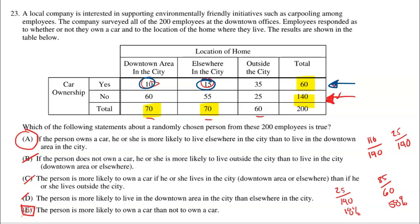That's a really good reading problem. It's one of those questions where you don't want to just jump to the first choice and think it sounds right. Really take your time to look at all the choices. There's almost definitely going to be a problem on the exam dealing with two categorical variables in a two-way table like this, and you really have to dive into the numbers to answer the questions.